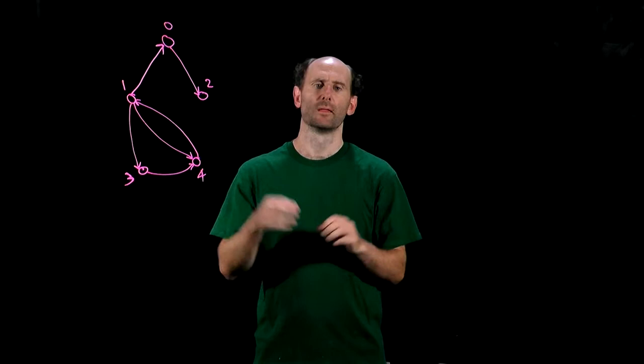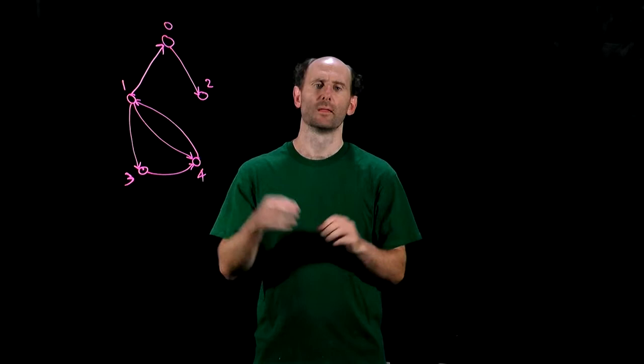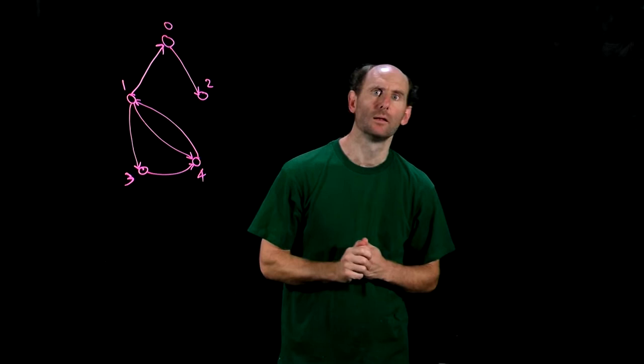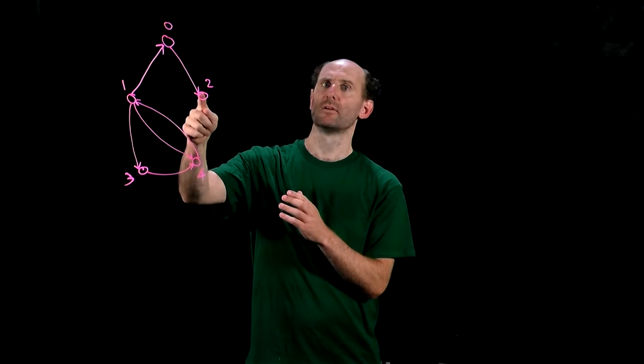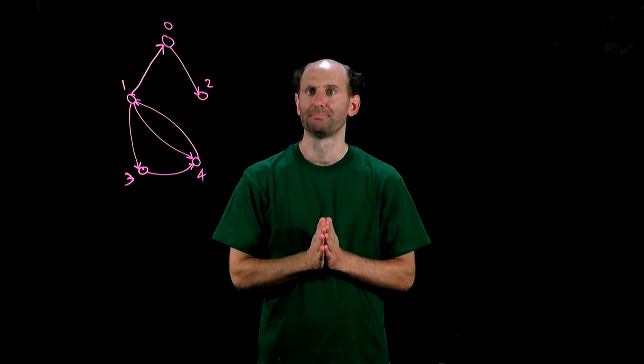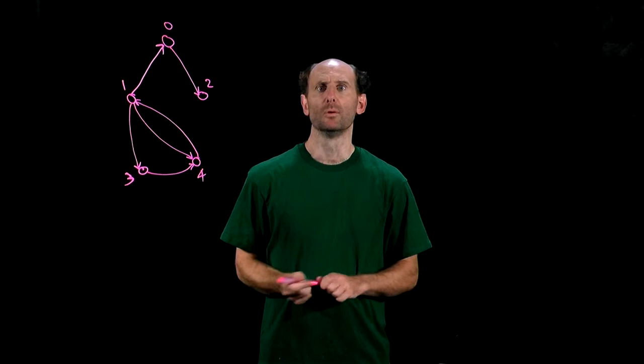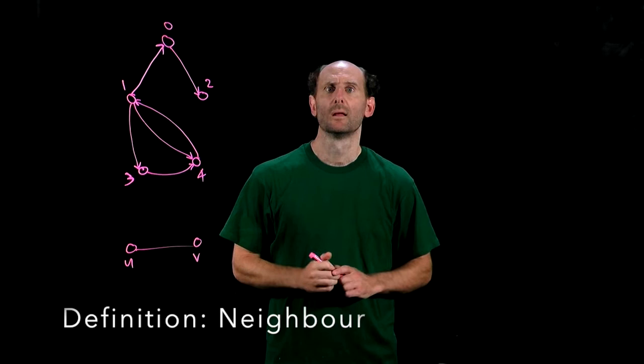we'll say that V is adjacent to U, so that V is an out-neighbor of U and U is an in-neighbor of V. In our example, 2 is adjacent to 0, 2 is an out-neighbor of 0 and 0 is an in-neighbor of 2. In the undirected case, if there is an edge from U to V, then U is a neighbour of V and V is a neighbour of U.